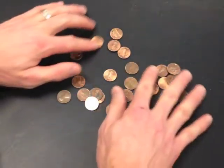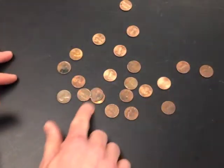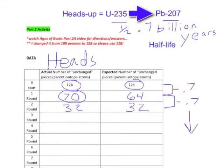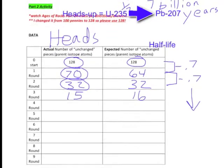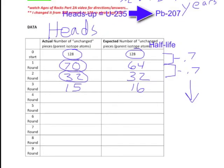Once again, separate out the heads and the tails, and count up how many are still heads. Maybe I'm down to about 15. What is expected? Expected is half of 32, which is 16. So you can continue filling this out: 16, 8, 4, and so on — continue filling this out with your actual data, whatever you happen to get.